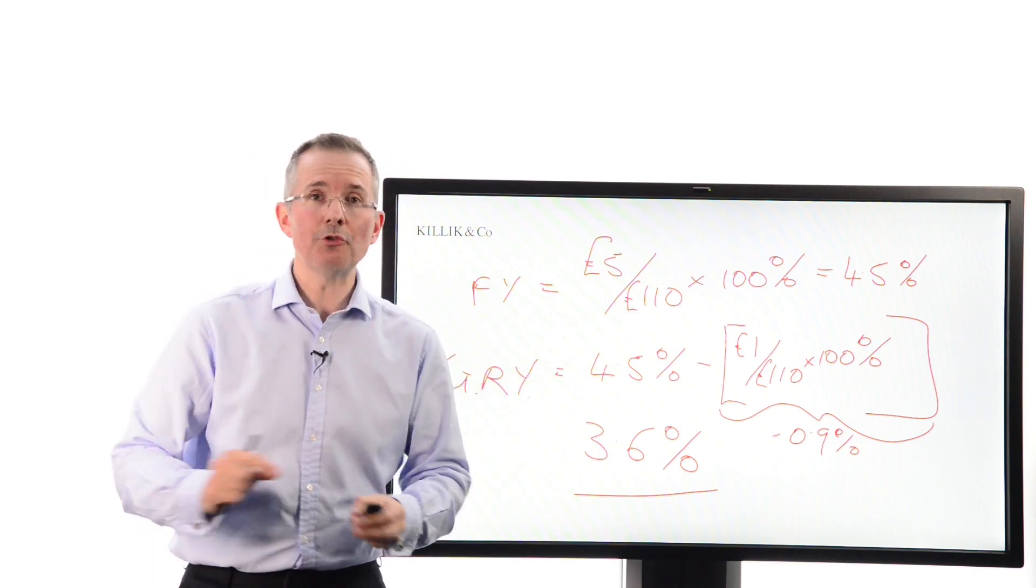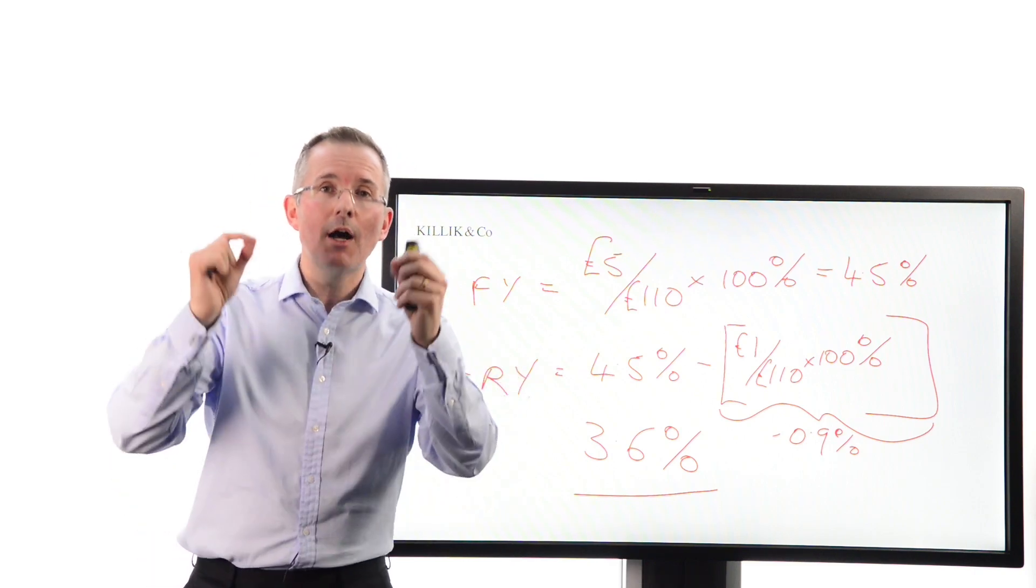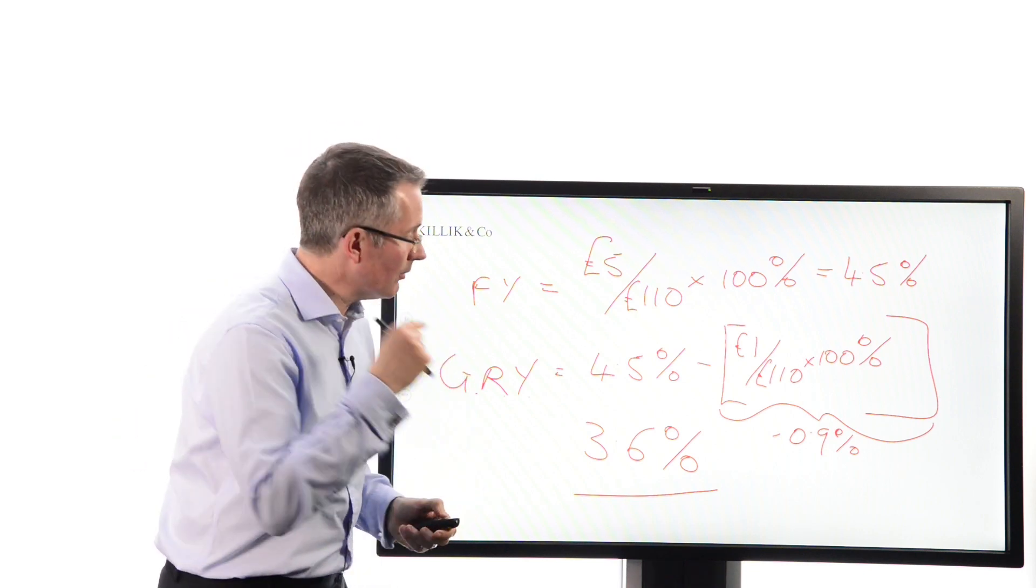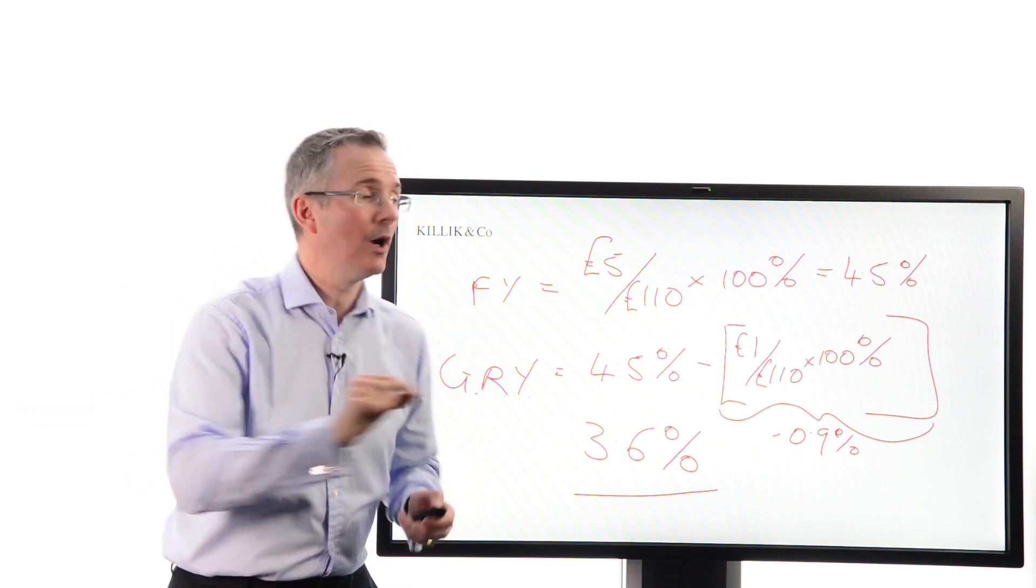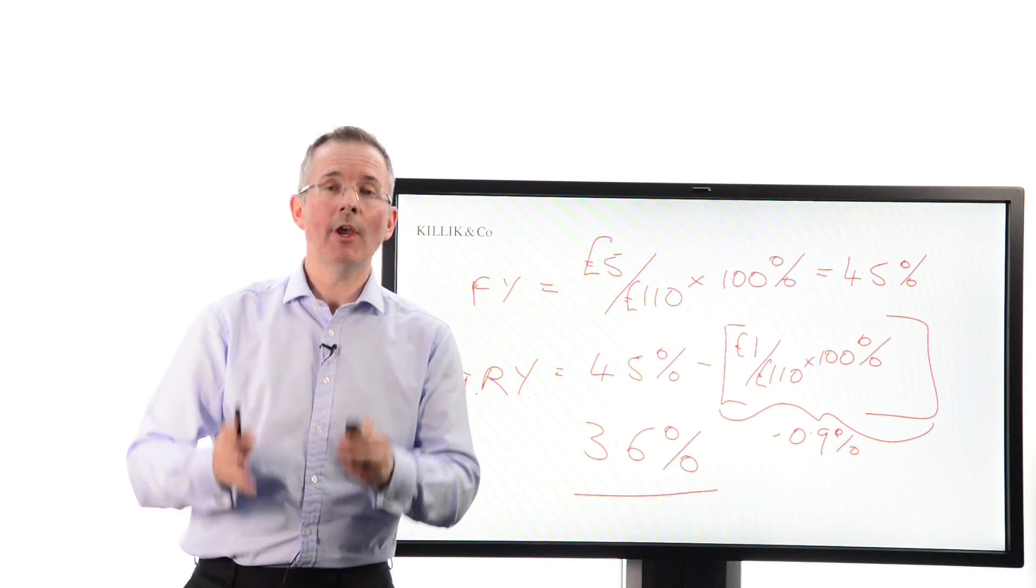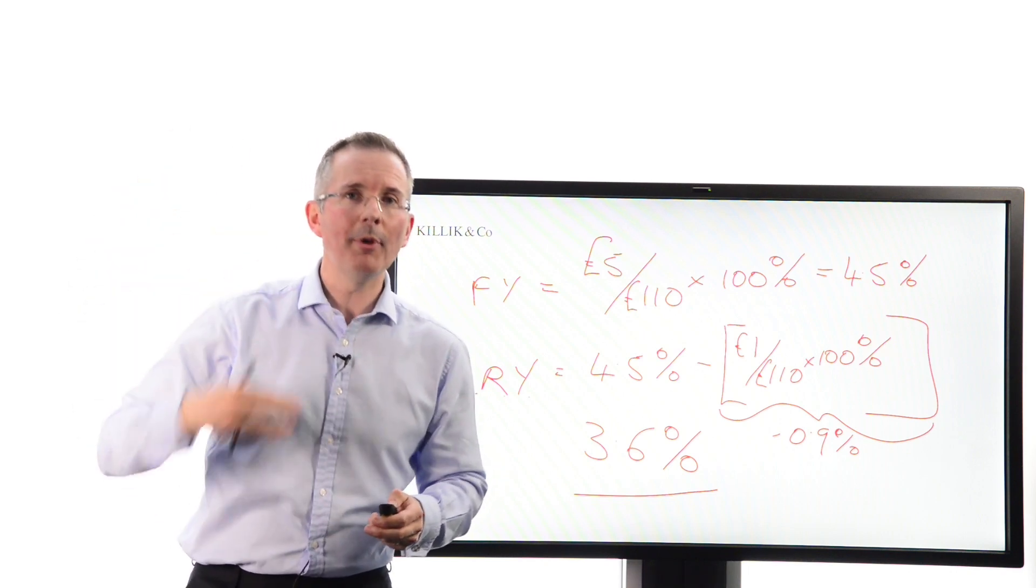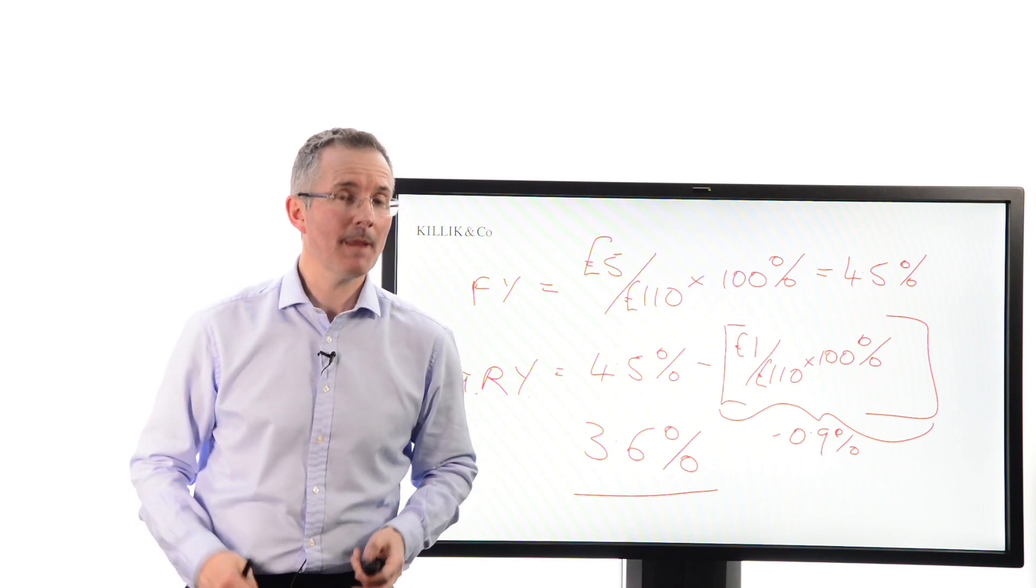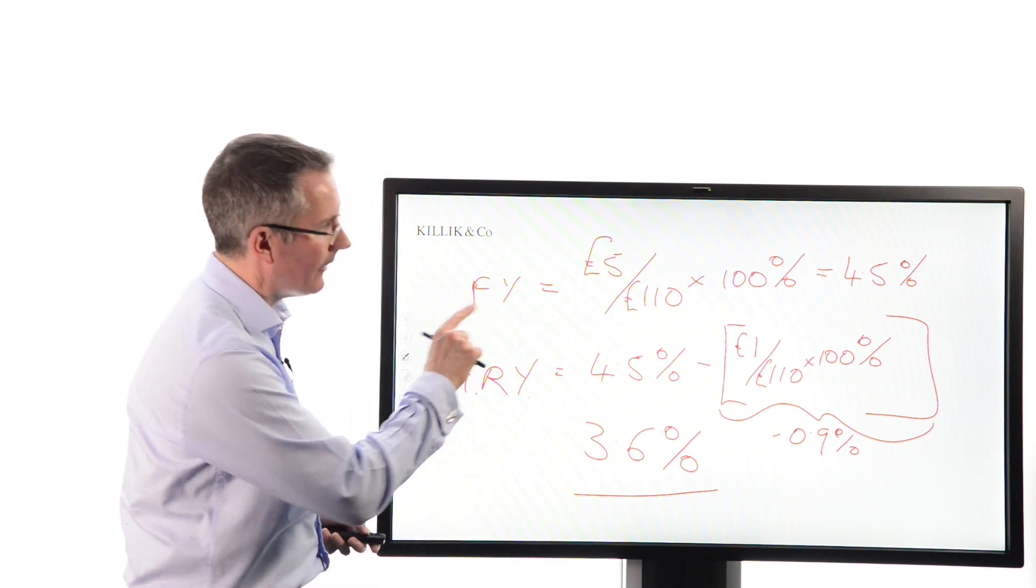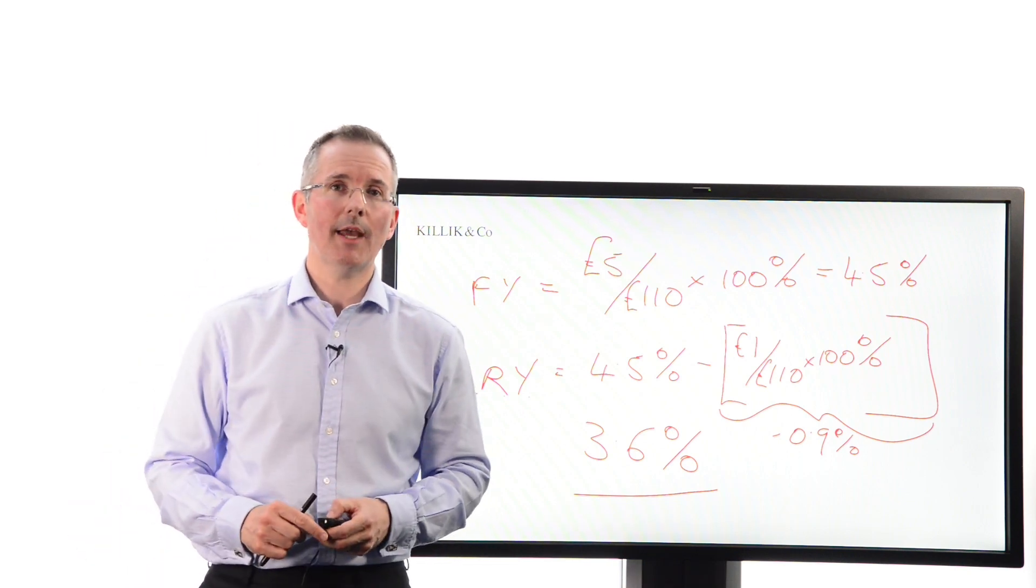Now, no one's going to ask you to do that in practice, but here's the point. Because this bond trades above nominal value, 110 is above 100, the gross redemption yield factoring in losing a pound a year is below the flat yield, and that will usually be the case. If a bond trades below par, opposite relationship, your total return will be higher than your flat yield. So there you have it. And bear in mind that second calculation is a slight simplification.